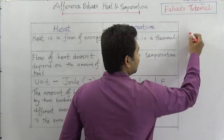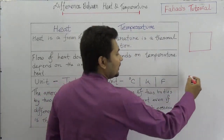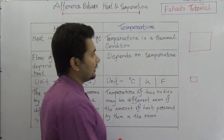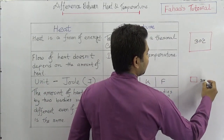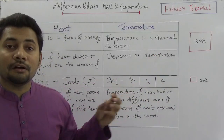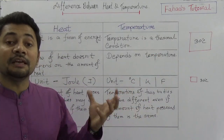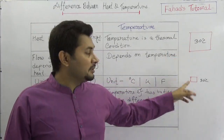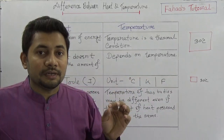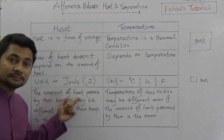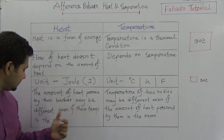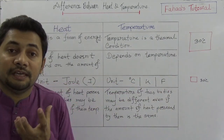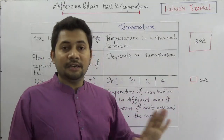Both bodies — one made of iron and one made of copper — may have the same temperature, say 30 degrees Celsius each. But these are not the same metal and not the same mass. Suppose one is 30 kg of iron and the other is 1 kg of copper, yet the temperature is the same. The amount of heat possessed by the iron body and the amount of heat possessed by the copper body are not the same, even though the temperature is the same.